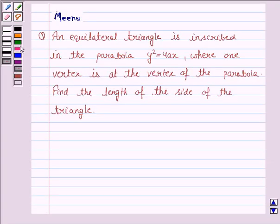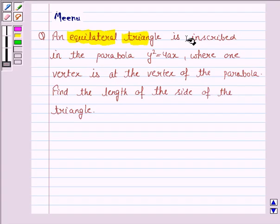Hello and welcome to the session. Let us discuss the following question. It says, an equilateral triangle is inscribed in the parabola y square is equal to 4ax, where one vertex is at the vertex of the parabola. Find the length of the side of the triangle.